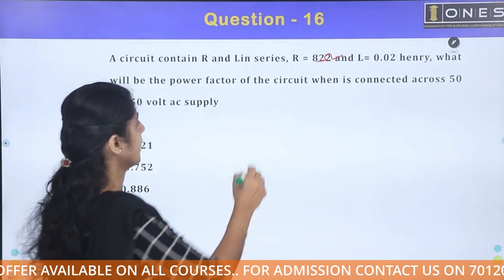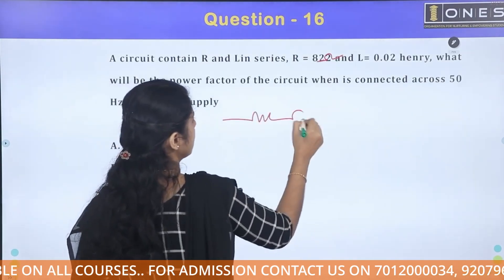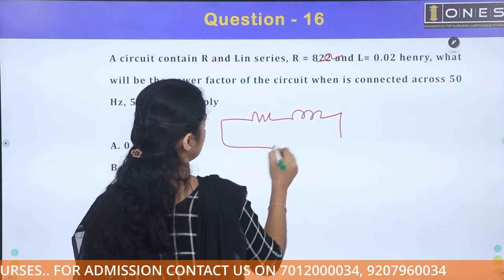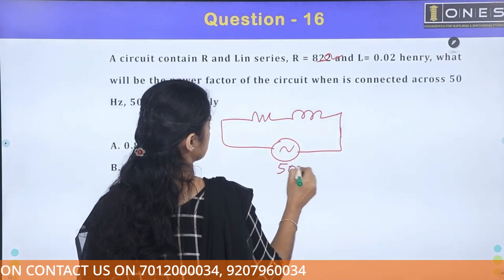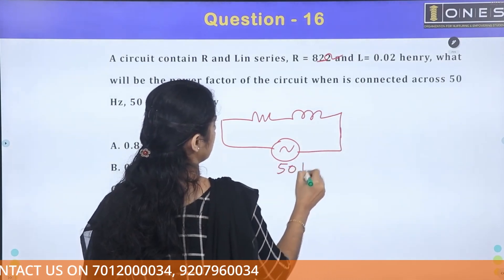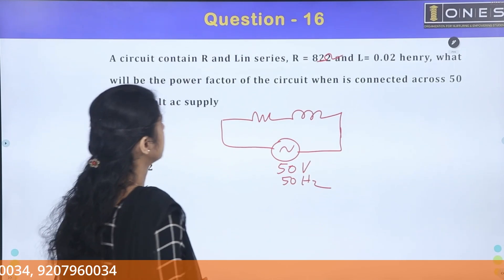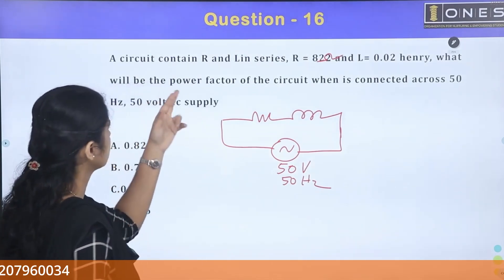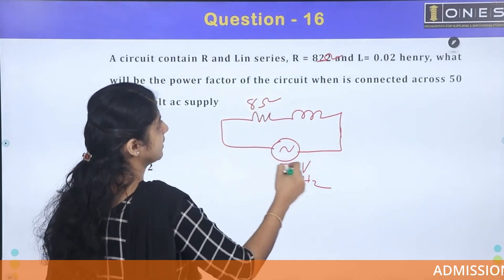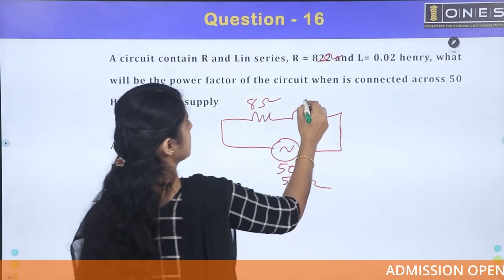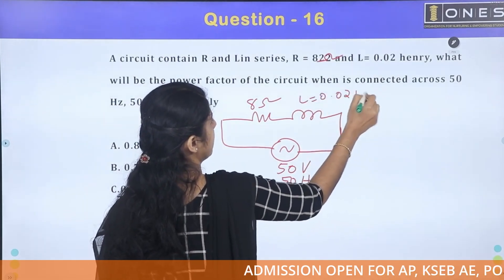Let's set up the RL circuit. We have one RL circuit with an AC source of 50 volt, 50 hertz. The resistance value is 8 ohm and the inductance value is 0.02 henry.